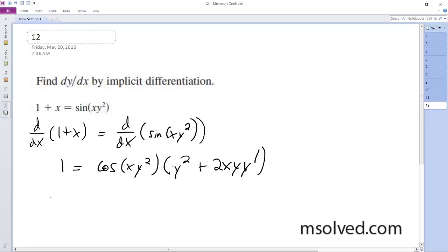y squared plus 2xy, y prime. Okay, so we're going to have 2xy, y prime is equal to 1 divided by y squared.